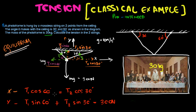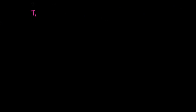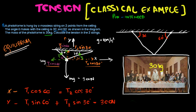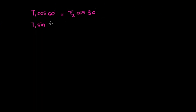So we have: T1 cosine 60 equals T2 cosine 30, and T1 sine 60 plus T2 sine 30 equals 300 newtons. Let's solve these two equations.